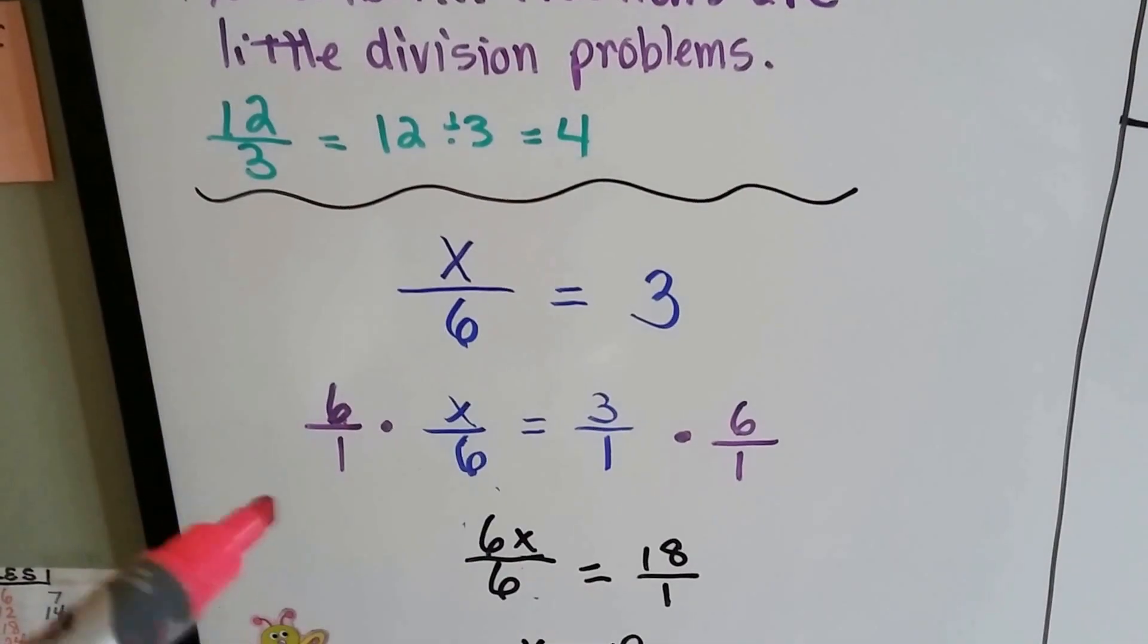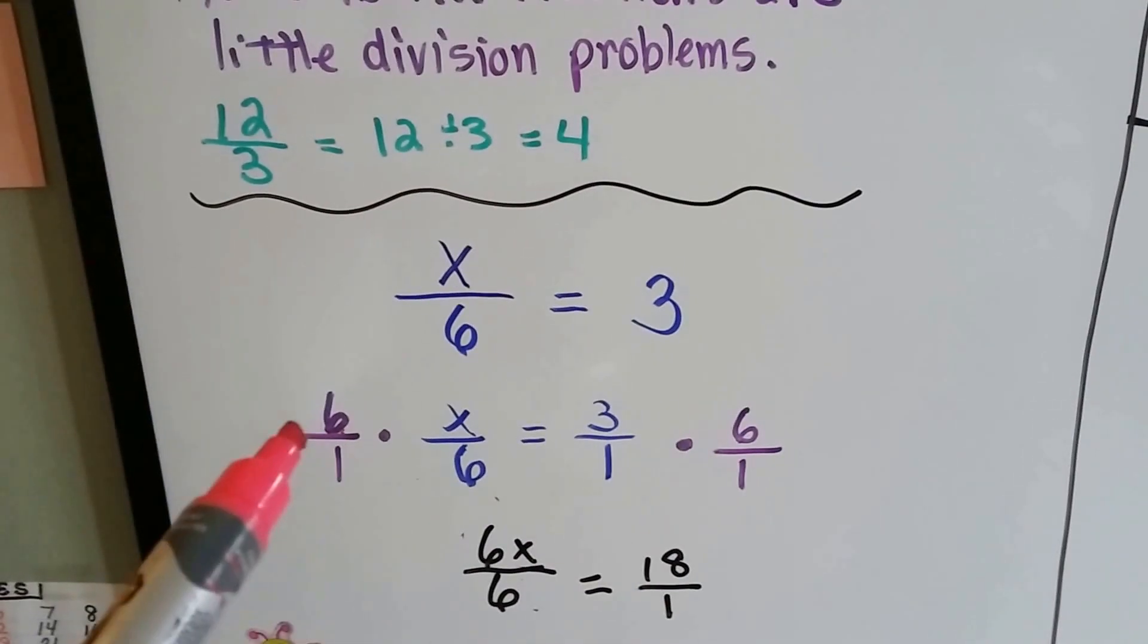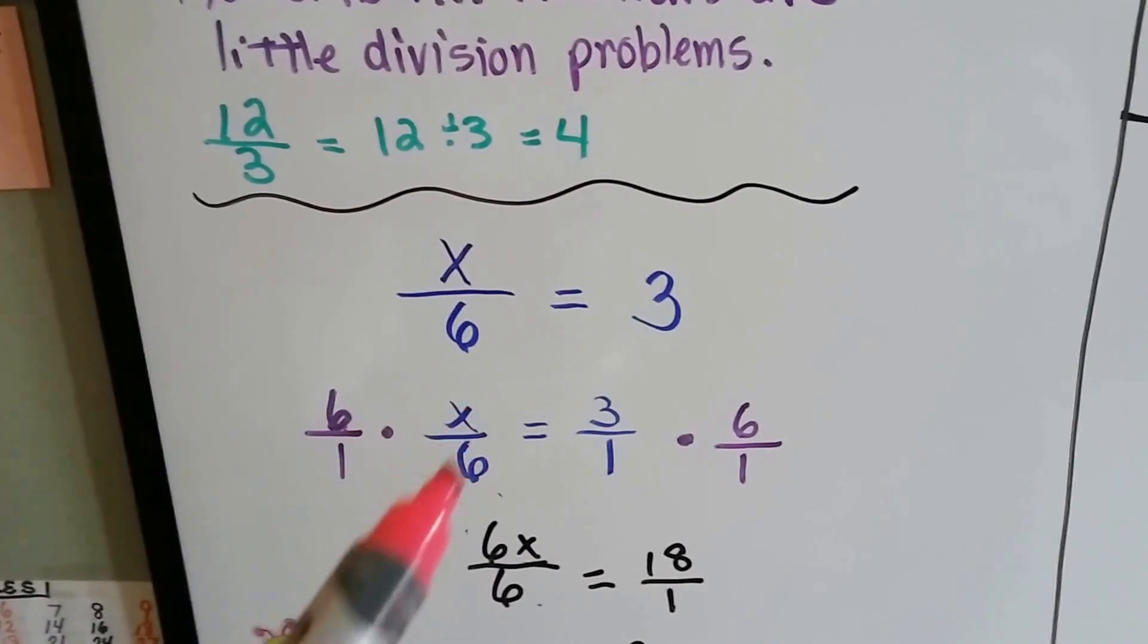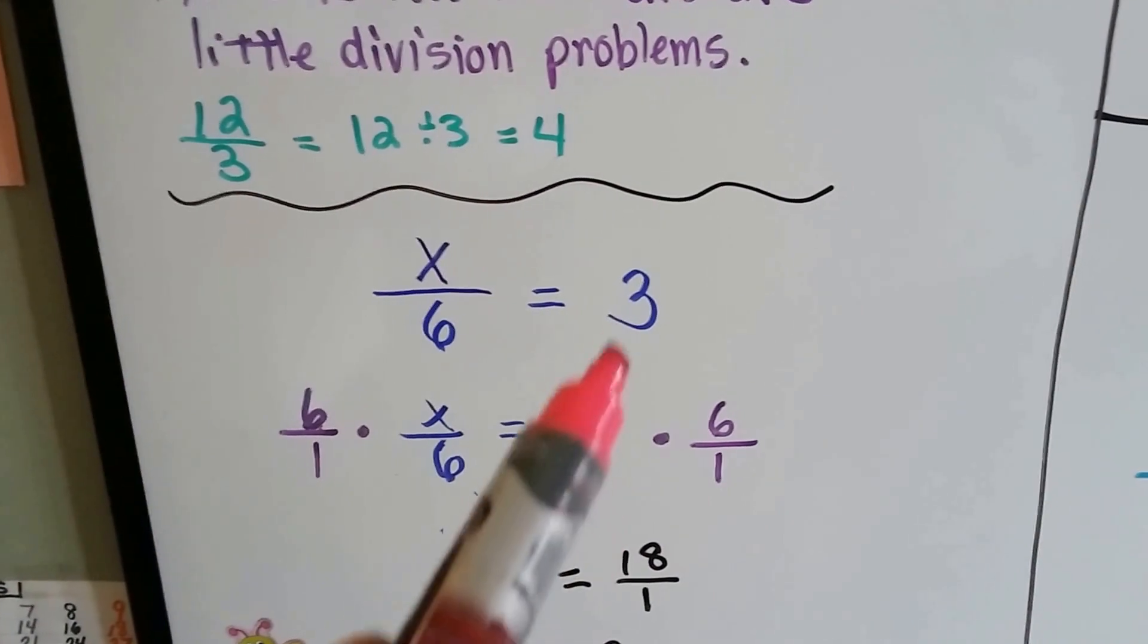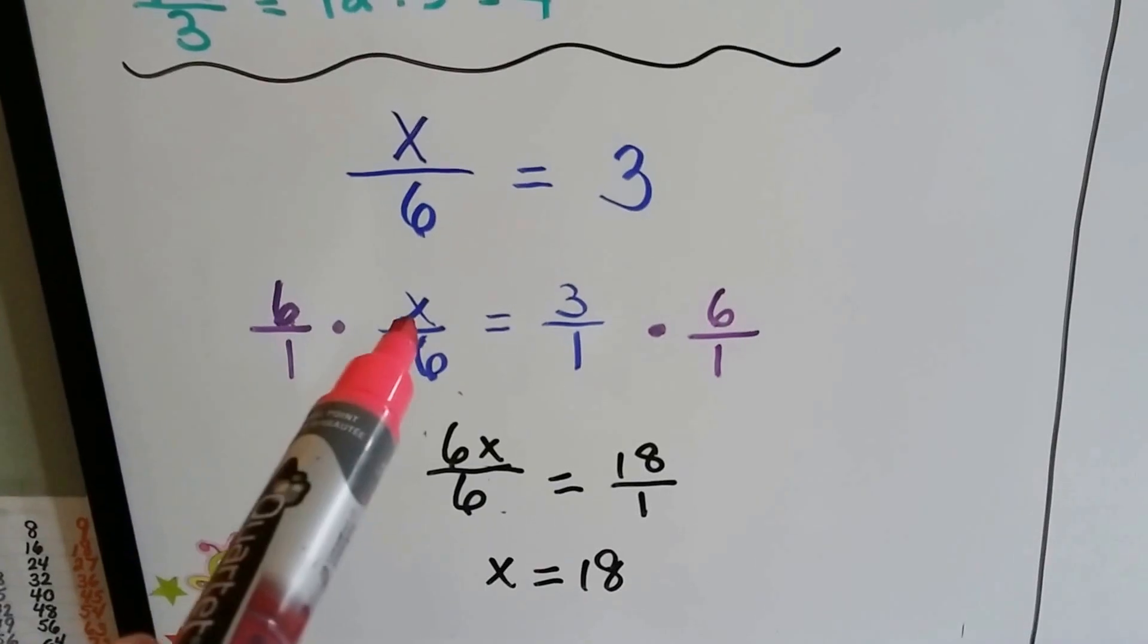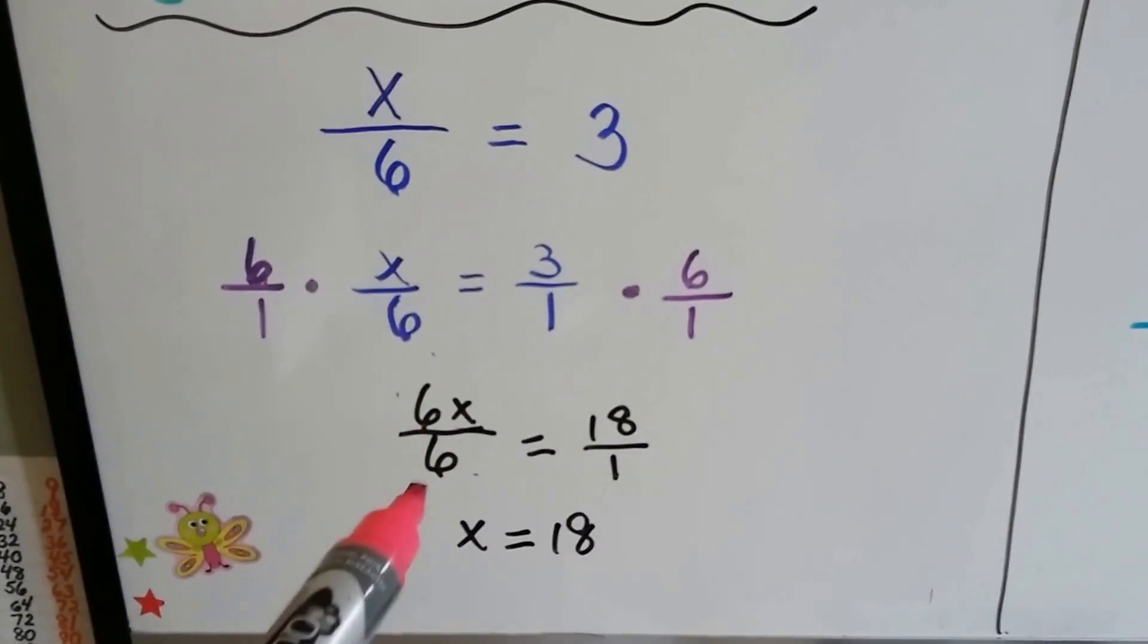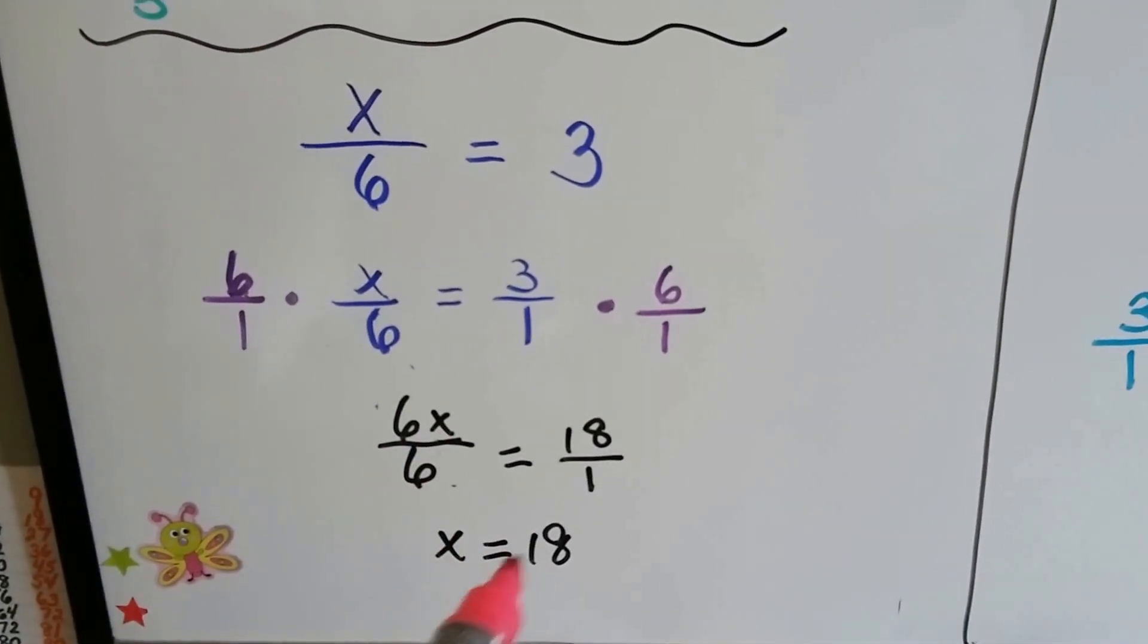We're going to multiply 6 on this side and 6 on this side. We're going to turn it into 6 over 1 improper, because this is a fraction, so we can multiply fractions to fractions. 3 over 1 is the whole number 3 times 6 over 1. We end up with 6x over 6 and 18 over 1. This 6 cancels out this 6, and we end up with x equals 18.